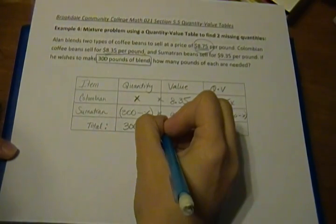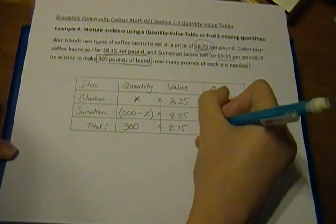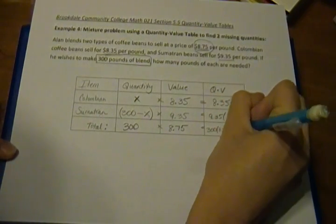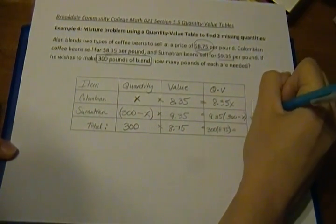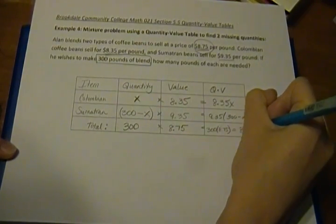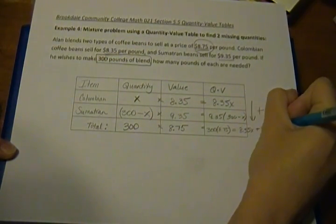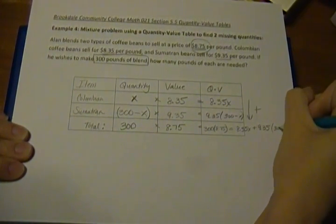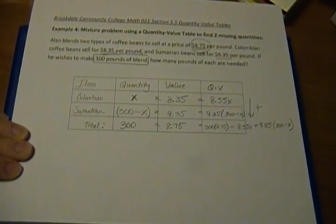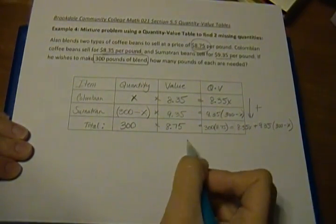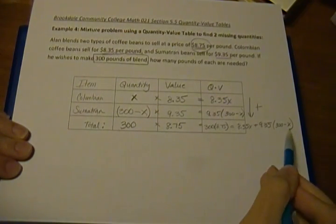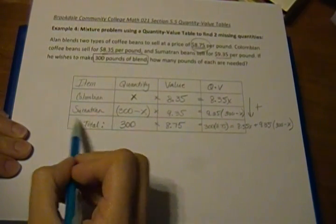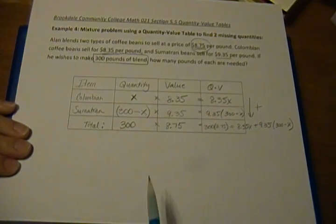And then our total quantity-value is going to be 300 times 8.75, which is going to equal the sum of the column, which is the 8.35X plus the 9.35 times the (300 - X). So now we have our equation here that we can solve to find out what X is, and then we can go back and figure out how many pounds of Colombian and how many pounds of Sumatran beans we need to make our blend.